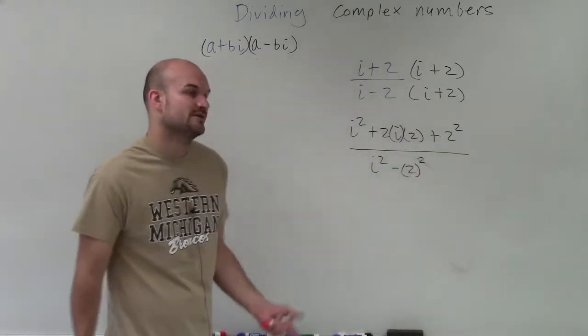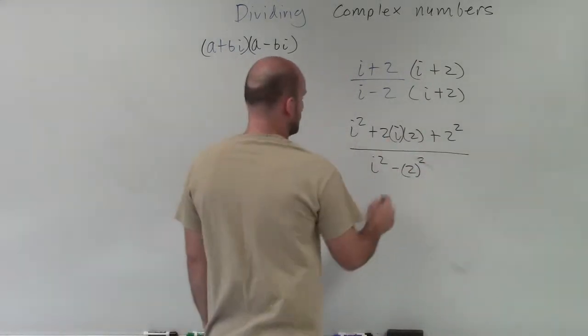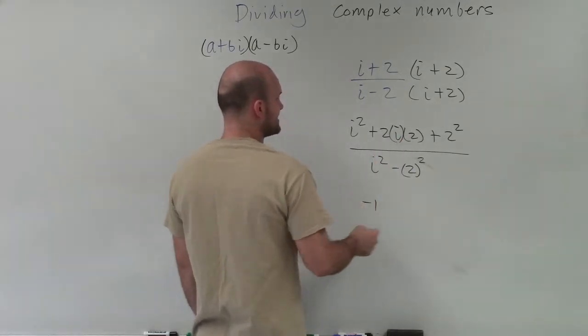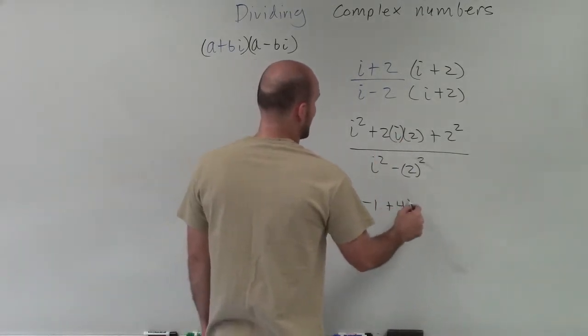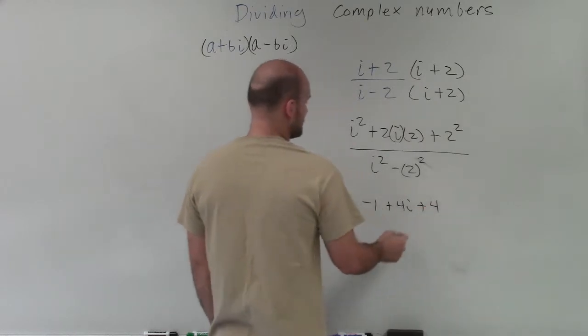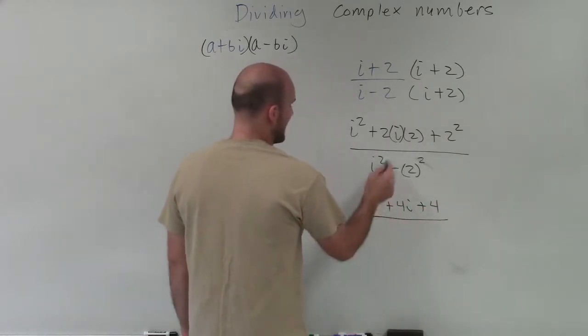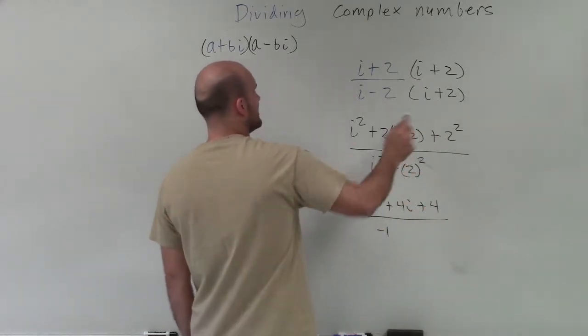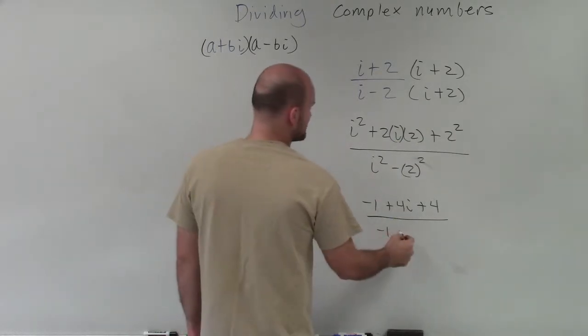So now I can just rewrite this and simplify my terms. Well, we know that i squared is going to be negative 1. 2i times 2 is going to be a positive 4i plus 4. And then my denominator, I have i squared, which is negative 1, and 2 squared, which is 4, so it'd be minus 4.